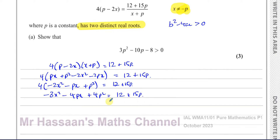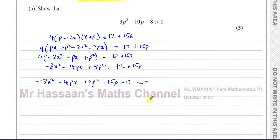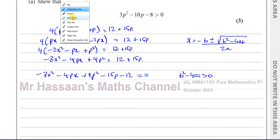Bringing all terms to one side: minus 8x² minus 4px plus 4p² minus 15p minus 12 equals zero. This is our quadratic in x. Recall the quadratic formula: x equals minus b plus or minus the square root of b² minus 4ac, all over 2a. The part under the square root — b² minus 4ac — is called the discriminant.